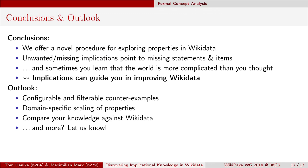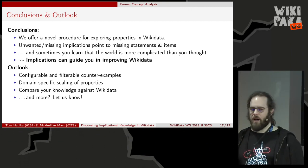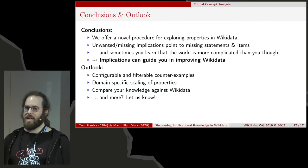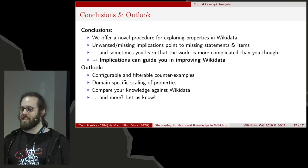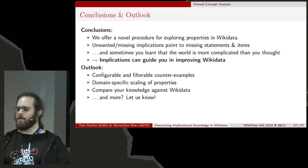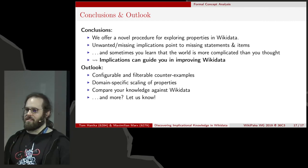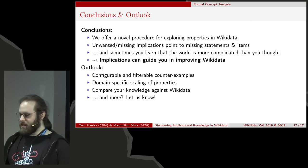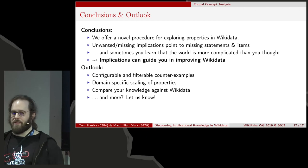We offer a procedure that allows you to explore properties in Wikidata and the implicational knowledge that holds between them. The key idea is that some implications you get you might not want because they shouldn't be true, and some you don't get but expect because they should hold. These unwanted or missing implications point to missing statements and items in Wikidata — they show you opportunities to improve knowledge in Wikidata. Sometimes you also learn something about the world, and usually it's that the world is more complicated than you thought.